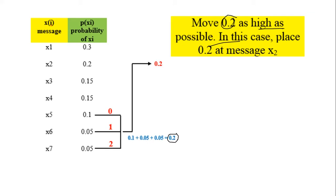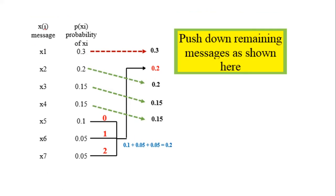So this 0.2 combined probability we move to the position of x2. We cannot move it to the position of x1, because we follow the rule 'as high as possible', so we move it to the position of x2. After moving the combined symbol probability to x2, we push down the remaining messages. The 0.3 x1 message stays as it is, and the remaining messages are moved down accordingly.